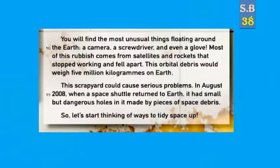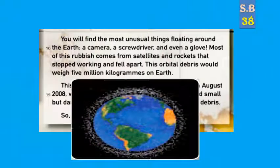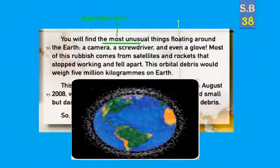You will find the most unusual things floating around the Earth — أكثر الأشياء غرابة تطفو حول الأرض. Look at this picture — here we have millions of pieces of rubbish floating around the Earth, like a camera, a screwdriver, and even a glove — حتى قفاز. 'The most unusual' is the superlative form, and 'floating' is a gerund — a noun ending in -ing.